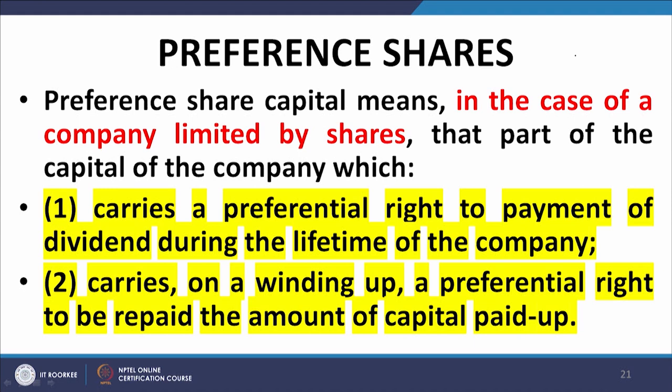On a winding up, preference shares carry a preferential right to be repaid the amount of capital paid up. So as long as the company is running and generating profits, the preferential holders have a preemptive right in so far as the dividend is concerned. And on the winding up of the company, the preferential holders again have a preferential right in so far as the distribution of assets is concerned. Their claims must be met before any payment is made to equity shareholders.